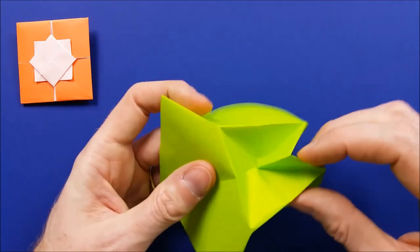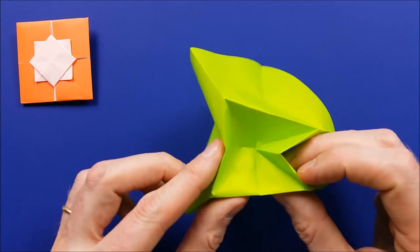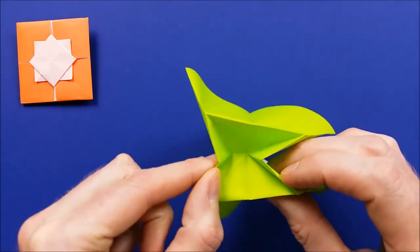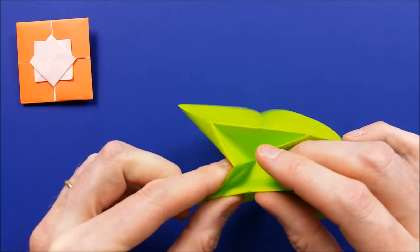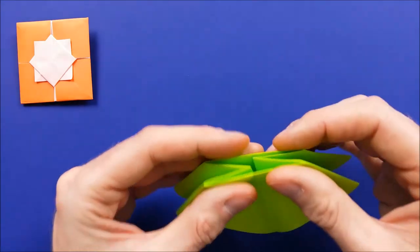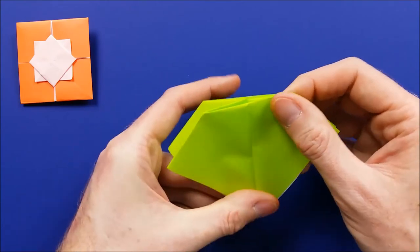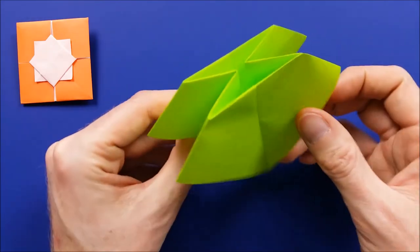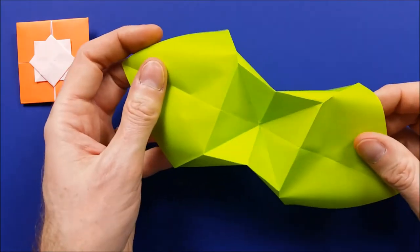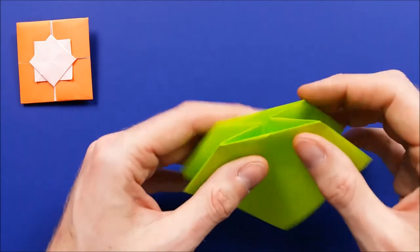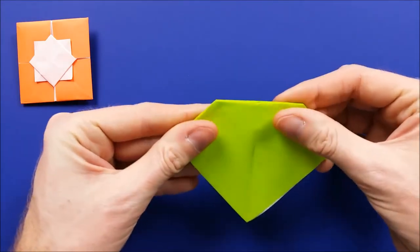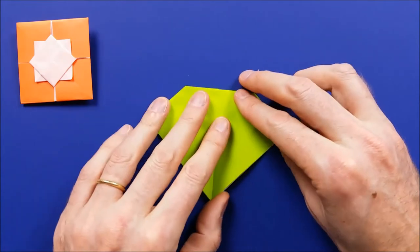Like this. And then do the same thing for the opposite edge here. Push inside. And fold like this. So let me show you what it looks like. So close the model. Put it flat on the table.